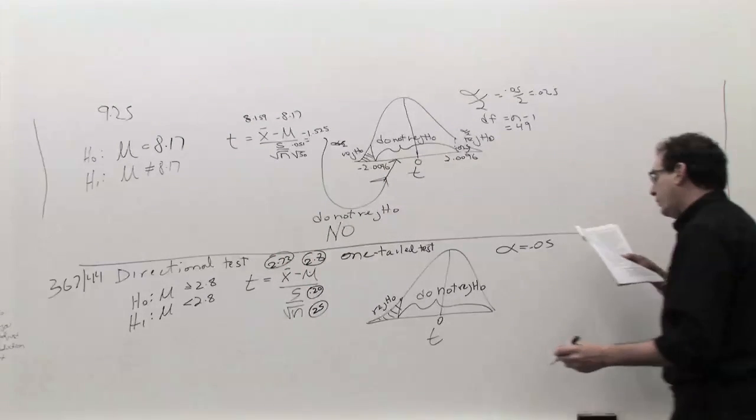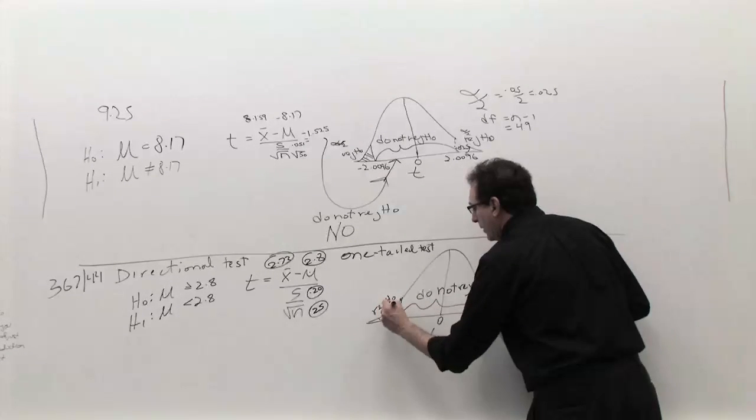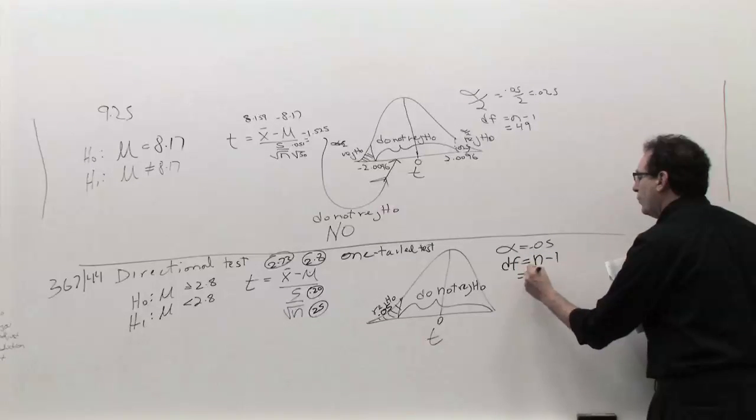So we're given the four key numbers, and the alpha we're told to use is .05 again. And this means that .05 goes here. And the degree of freedom, which we need for the size, is n minus 1, is 25 minus 1, which is 24.